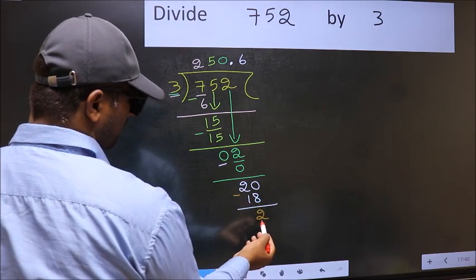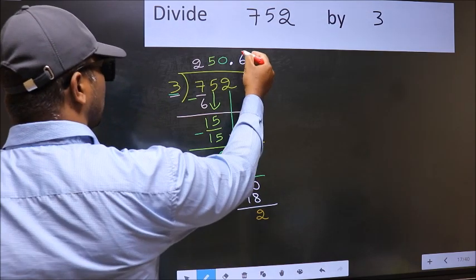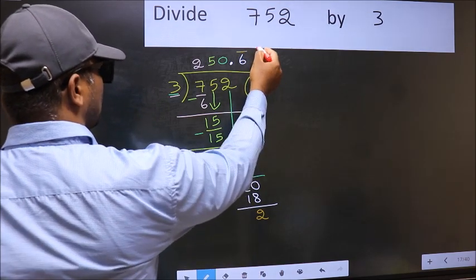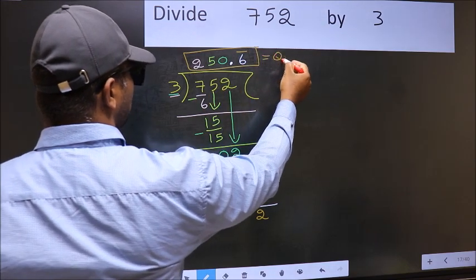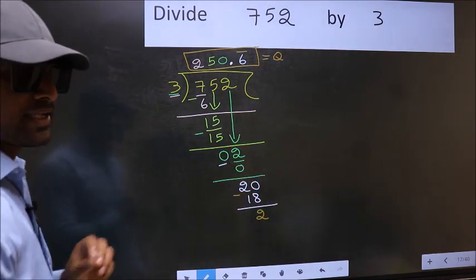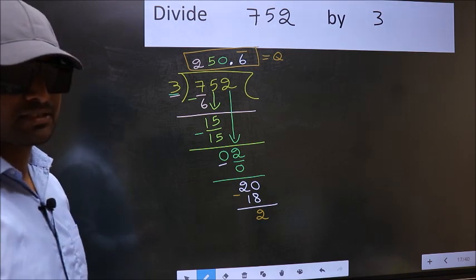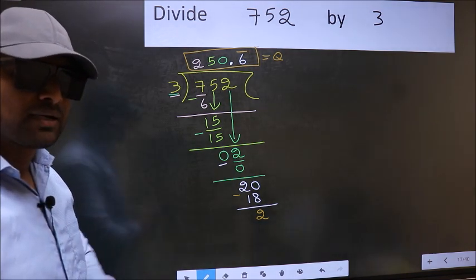We got 2 again. That means, we get bar on this number. So, this is our quotient. Did you understand where the mistake happens? You should not do that mistake.